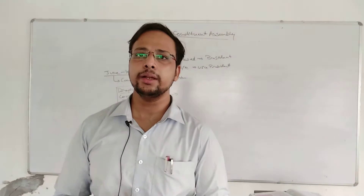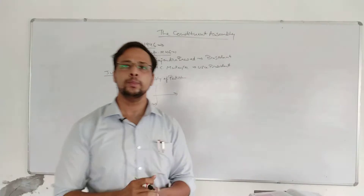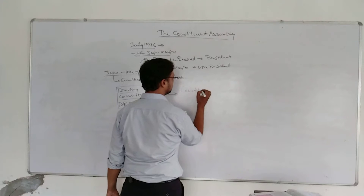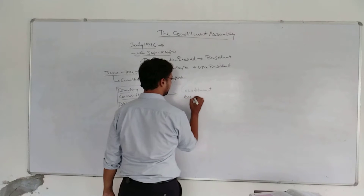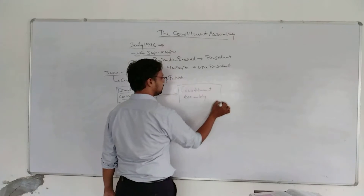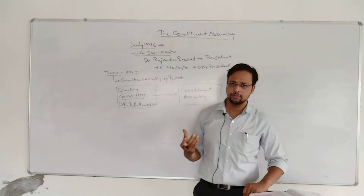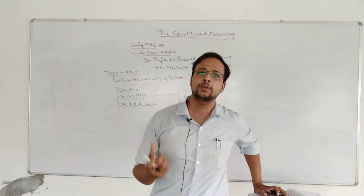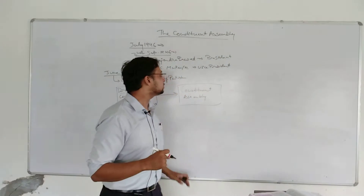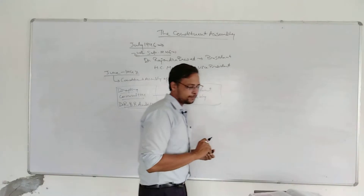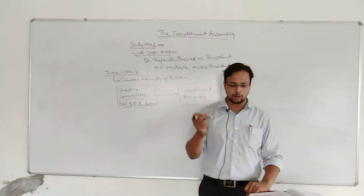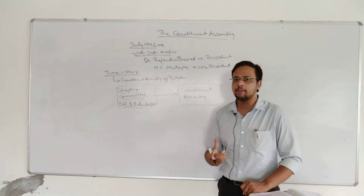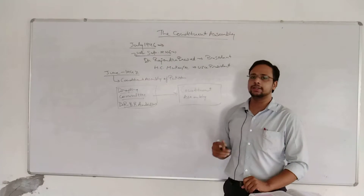The drafting committee was made and it was the duty of the drafting committee to refer the drafts made to the constituent assembly. The constituent assembly would then do the discussion on the drafts which were made and pass them unanimously with a consensus, after making a consensus in the drafting committee. The drafting committee was the authority making the draft and the discussions were to be held in the constituent assembly.